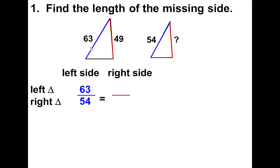So I have 63 divided by 54 would be the same as 49 divided by this unknown side, which we could call n.